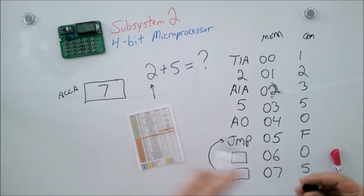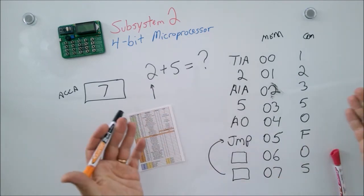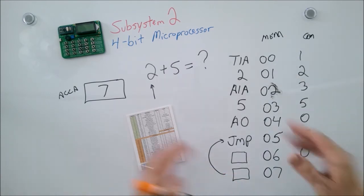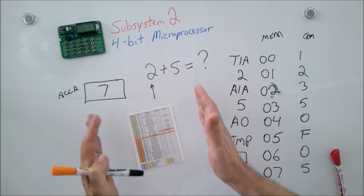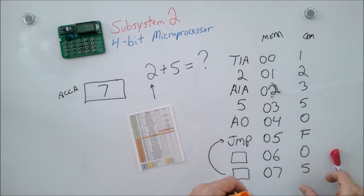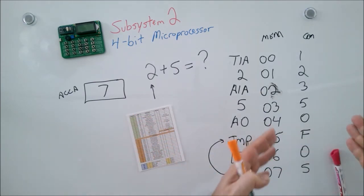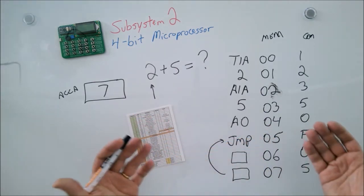So looking at our program that we've just compiled by hand, we have memory locations that I need to fill in my computer, and the commands that'll fill them out. Remember that BASIC program, print two plus five? This is what it turns out to look like in machine language when you actually decompile all this. So let's go to our computer, actually put this program in and see if it worked.